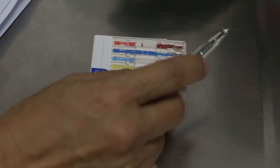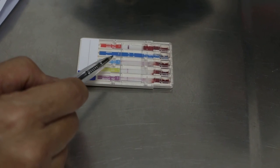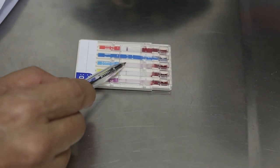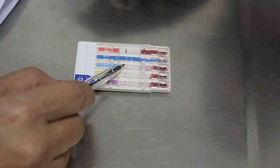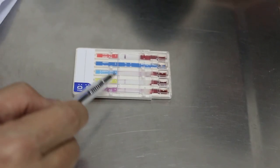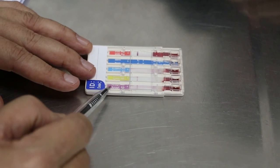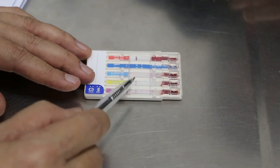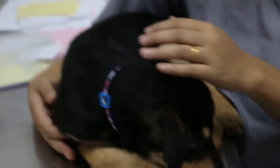And this test shows that no heartworm. E. canis very faint but it doesn't have E. canis now. Otherwise it will be two lines. Lyme disease and anaplasma also negative. So okay, we can go with it. We just continue with oxytetracycline.